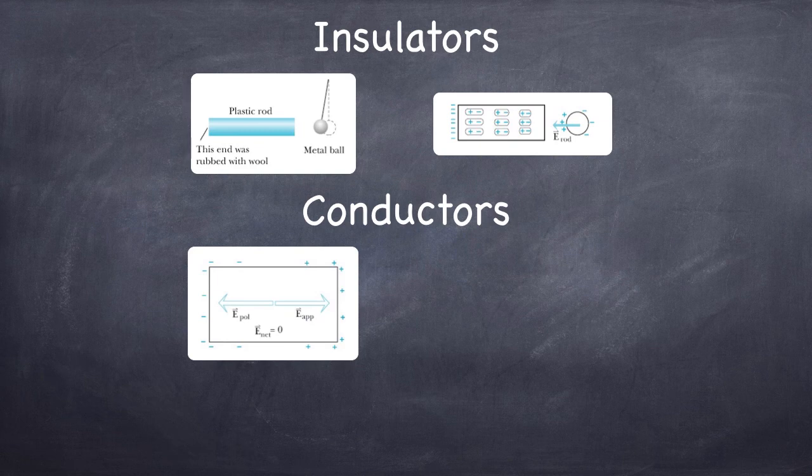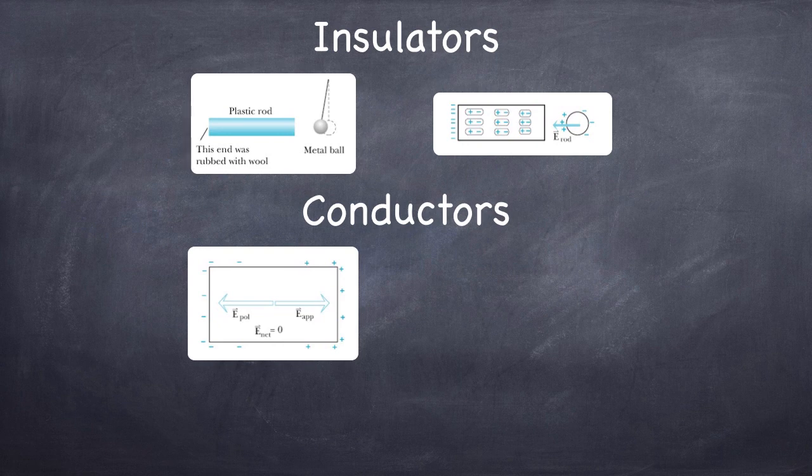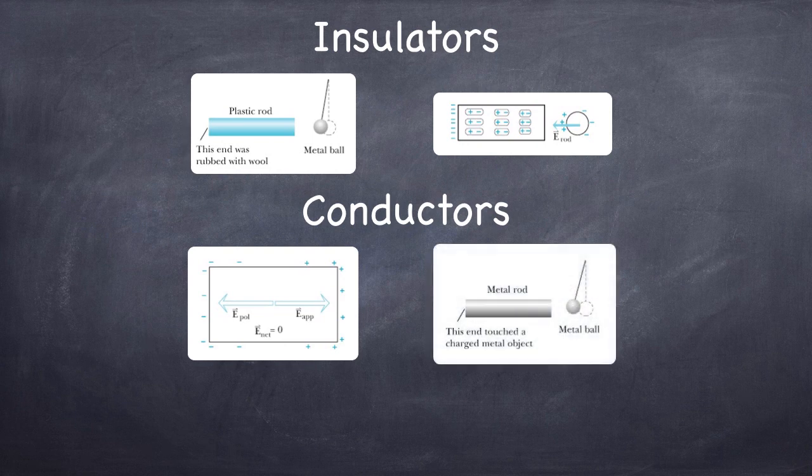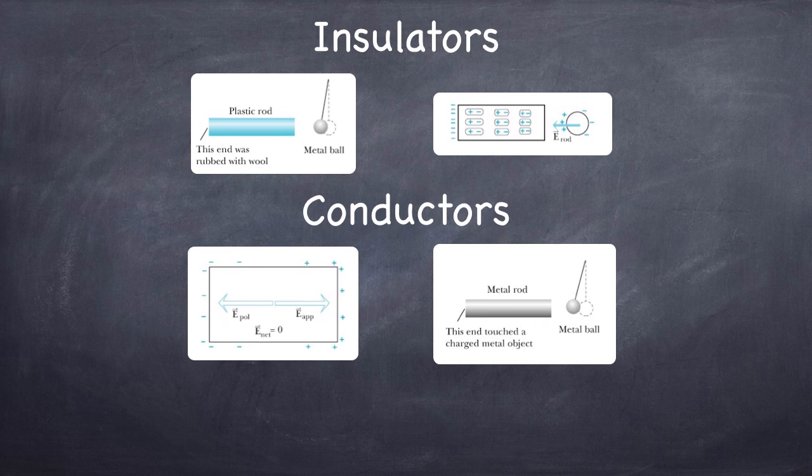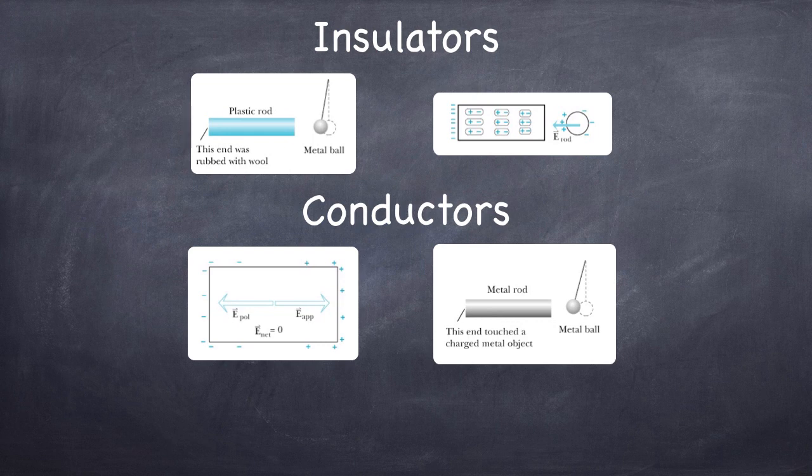And in conductors, of course, we already talked about the fact that the internal field is always zero, but the internal field is always the sum of the applied field and the field produced by polarization charges, or surface charges in this case, but the net field internally is always going to end up to be zero. So if you touch a metal rod with a charged object, the net charge is going to distribute itself around the surface of the rod until the internal field is zero, but if you bring a metal ball up to that metal rod, it will be attracted for the same reason that it was attracted to the plastic rod.